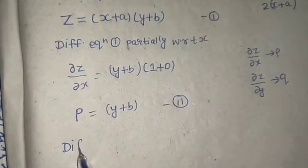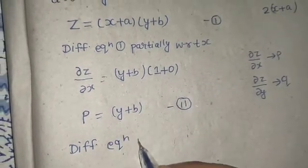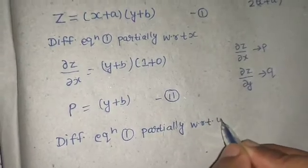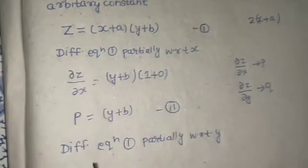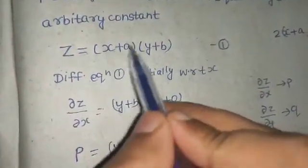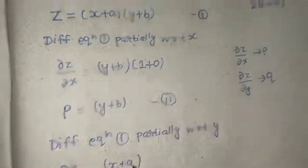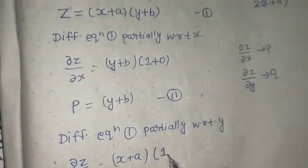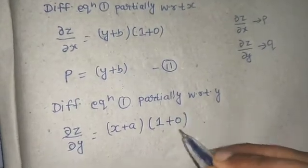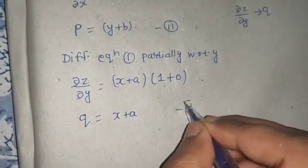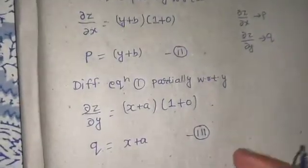Similarly, differentiate equation number one partially but this time with respect to y. When differentiating with respect to y, treat x as a constant. The derivative of y with respect to y is one, and derivative of b is zero since it is a constant. So del z by del y, which we can replace with q, equals x plus a. This becomes equation number three.